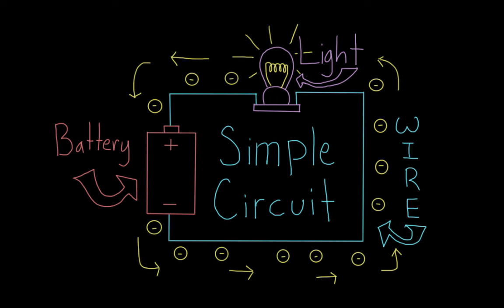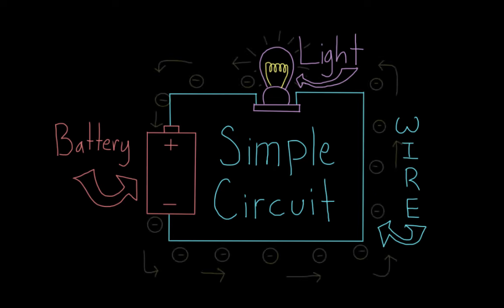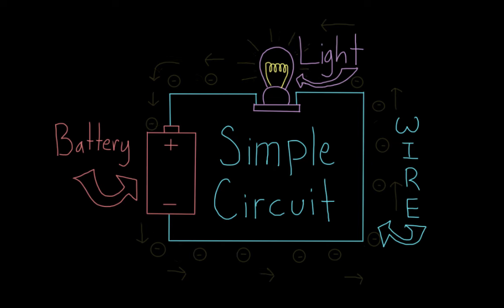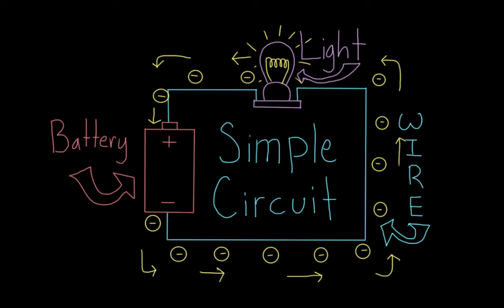Electrons can flow through this loop, which we call an electric current. And as this happens, it can turn on lights, move motors, and heat things up. But no matter what job it's doing, we can always think of a circuit as a path through which electricity flows.